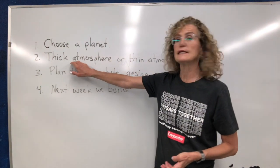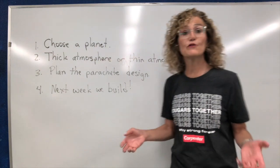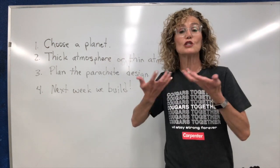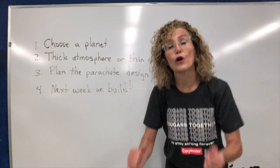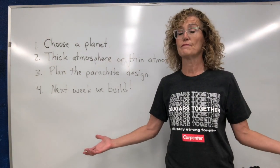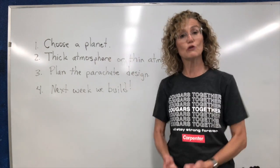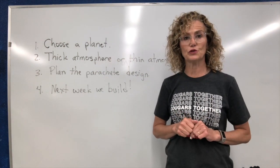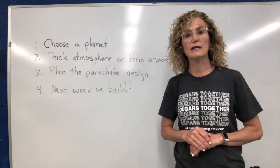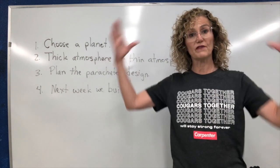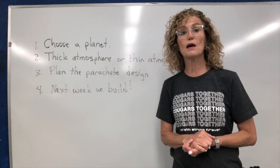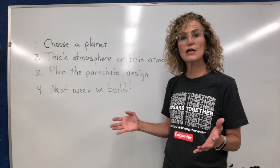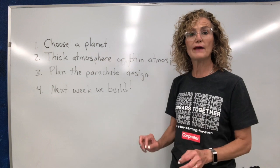You need to know: does your chosen planet have a thick atmosphere or a thin atmosphere? If it's a really thick atmosphere and you make a big parachute, so much atmosphere will be trapped in it that it'll take too long for your robot to reach the surface — maybe it won't even make it. But if the atmosphere is too thin, it will go down too fast. So your parachute design has to match the atmosphere. You're going to plan the canopy size, the length of the line, and the type of material. Then next week we're actually going to design and build it.